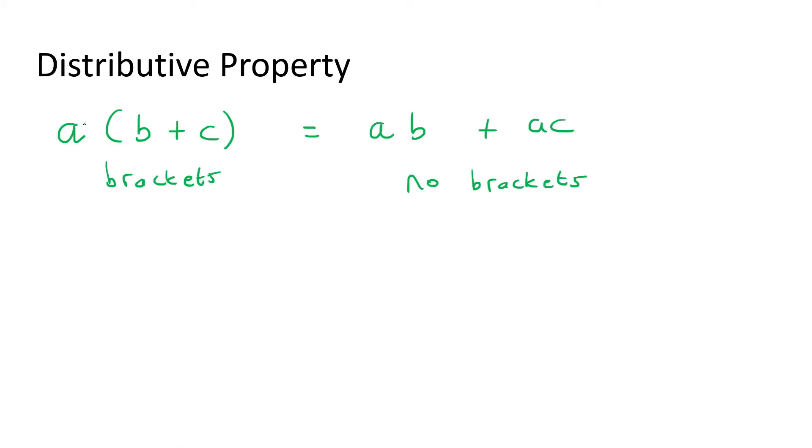Now, how does it work? Well, what they do is they take this a, and they multiply it over there. They distribute it over there, and they distribute it over there. So, what is a multiplied by b? Well, that'll be this one over here. And then, what is a multiplied by c? Well, that'll be this one over here.